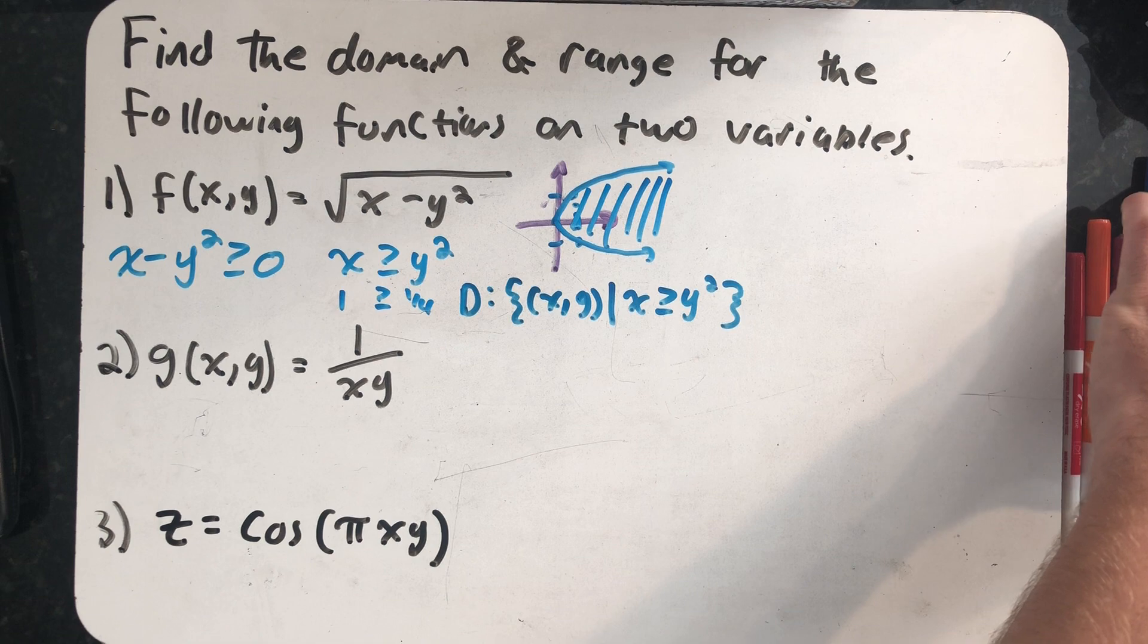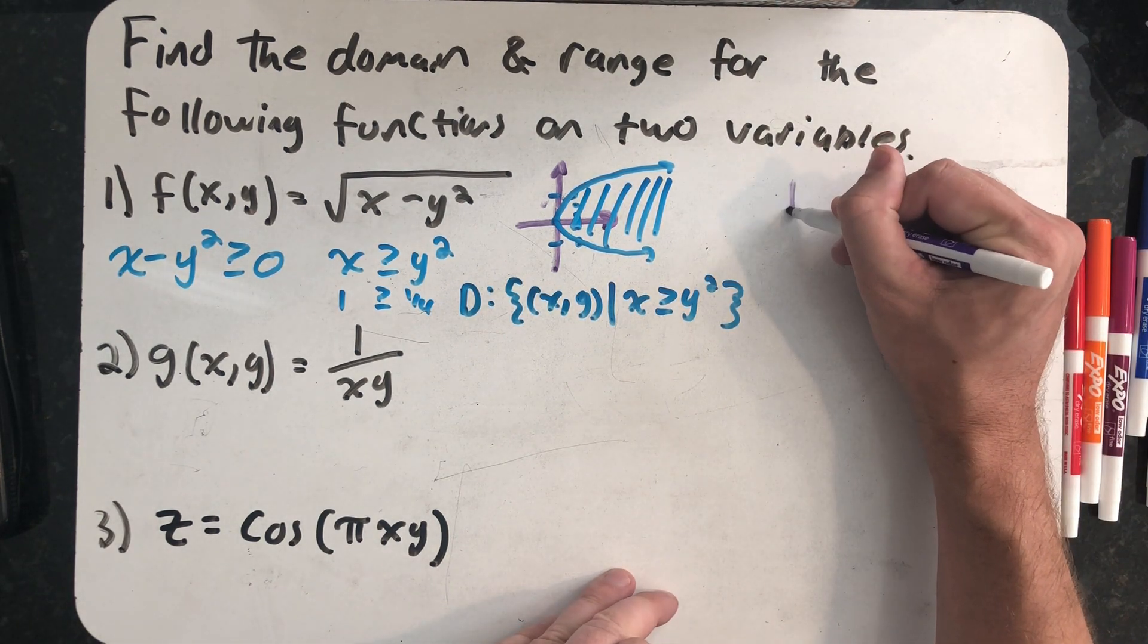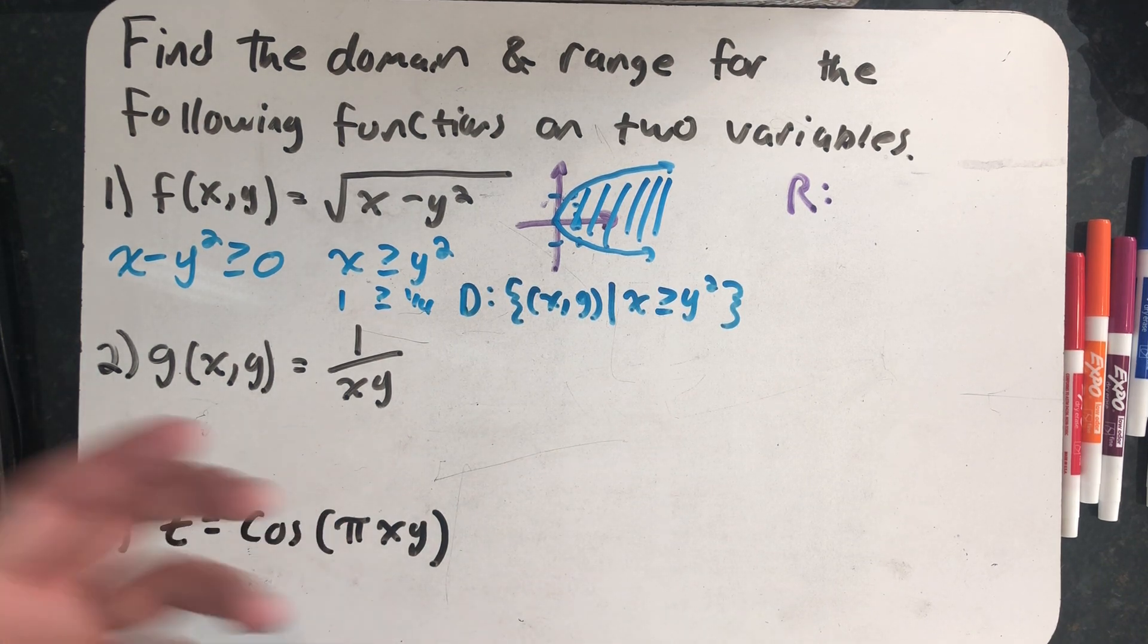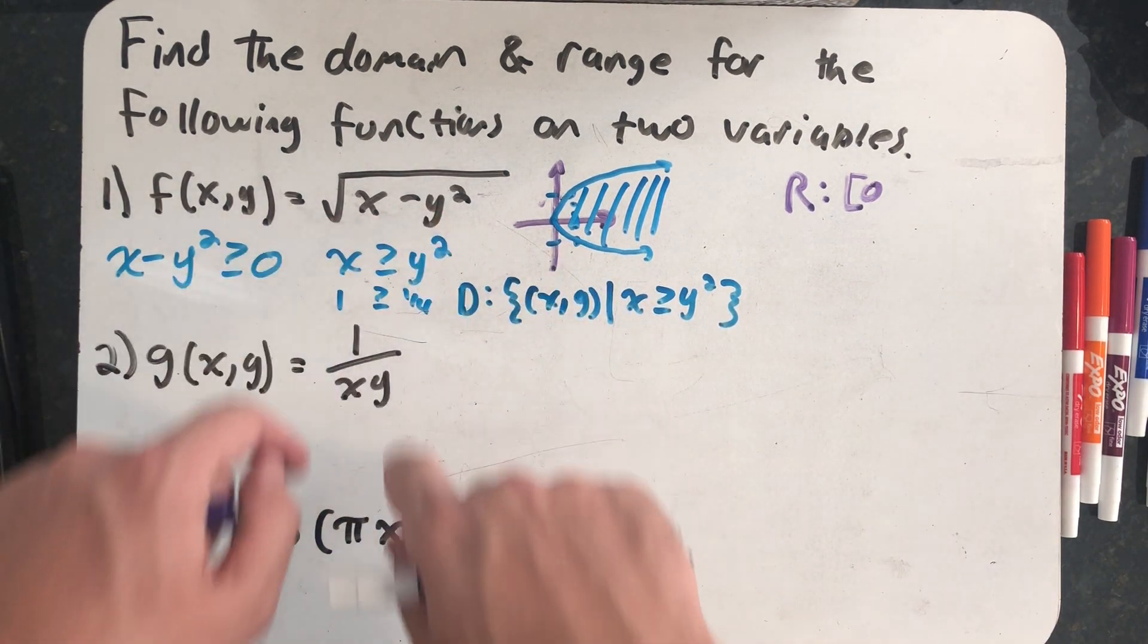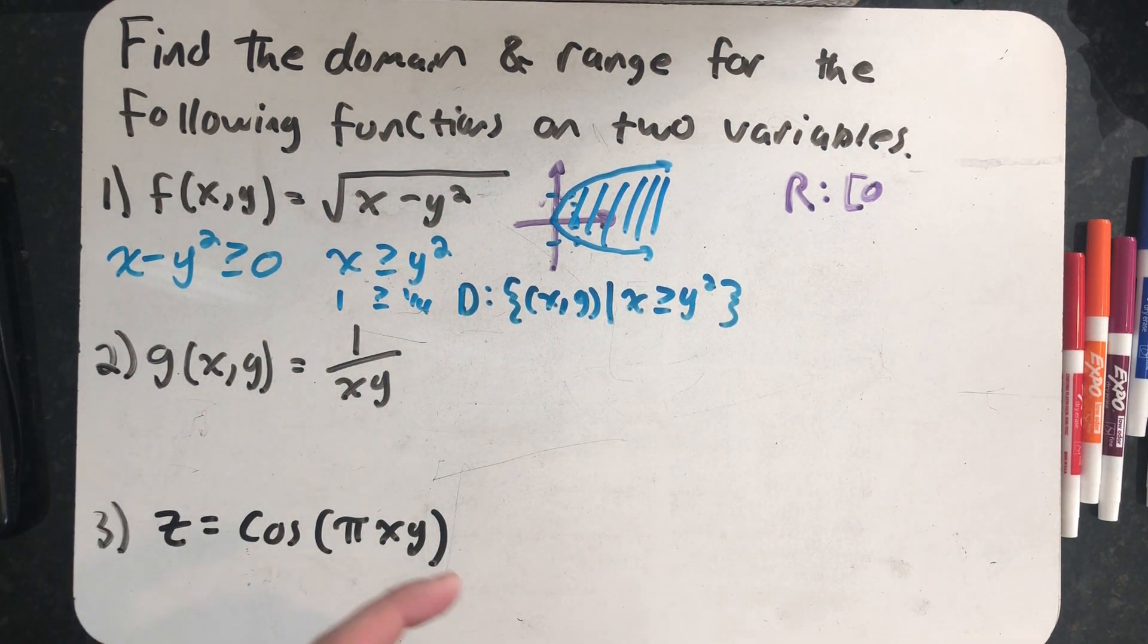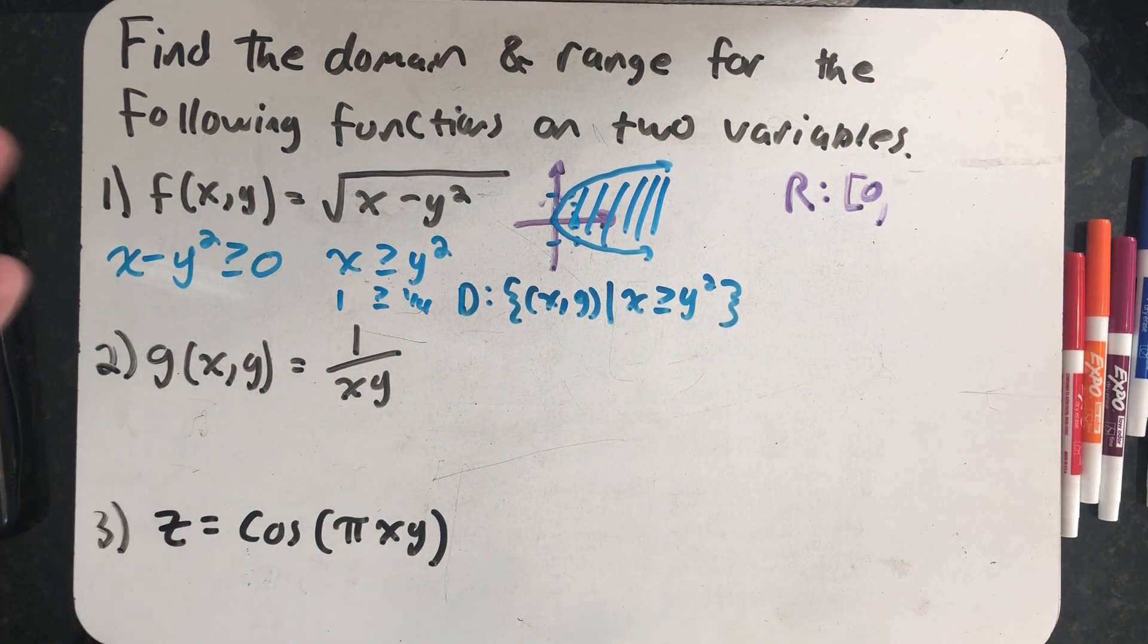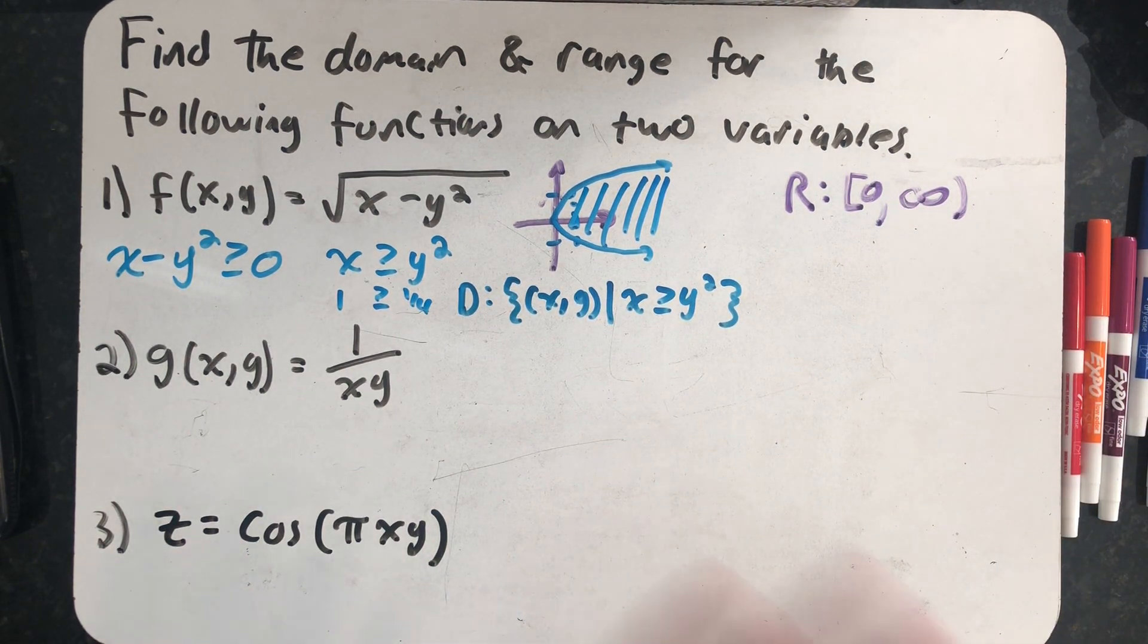Now I need to think about the range, the values we can get out for z. Well again, just thinking about square root functions. If this was just the square root of some number, which I argue it is, because if I take a number and subtract a number squared, I'm just taking the square root of a number, the smallest thing I could ever get out is zero. And in fact, if I plug in the origin, the square root of zero minus zero squared is zero. And then the square root function itself just keeps going and getting bigger.